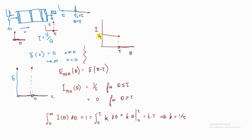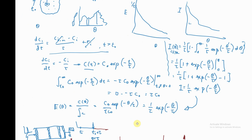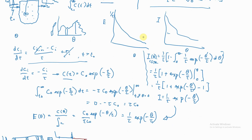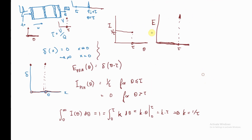Drawing both side by side: E(θ) for the PFR is a Dirac delta spike at τ going off to infinity, while I(θ) is a flat constant 1/τ from 0 to τ. These are very different, in contrast to the CSTR where E equals I. Here for the PFR, E is not equal to I, and we get quite different functions.